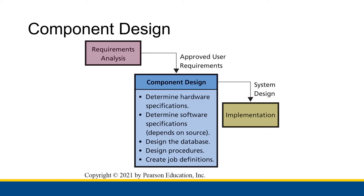Once we have the requirements, we can actually start designing the five information system components of our new system. We are figuring out the hardware, the software, the database, the procedures, and the people or the job definitions.